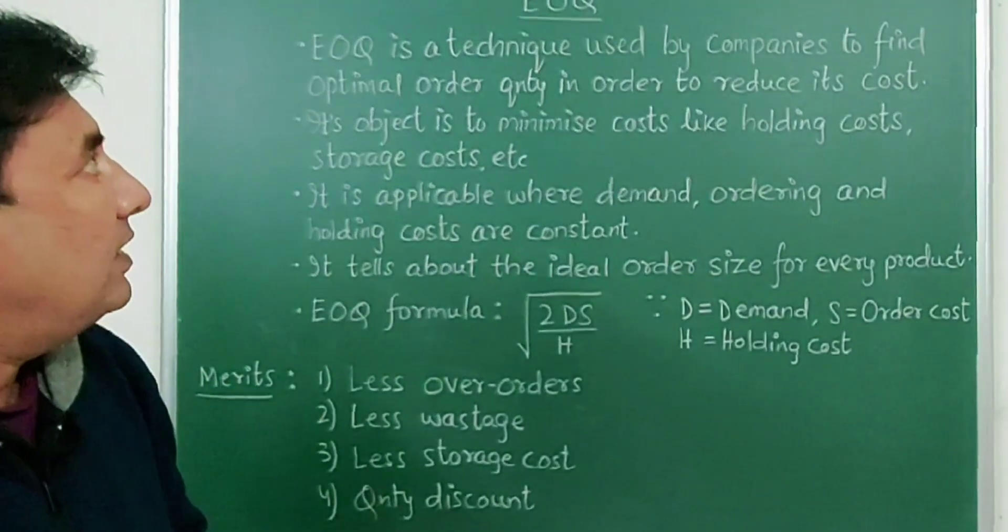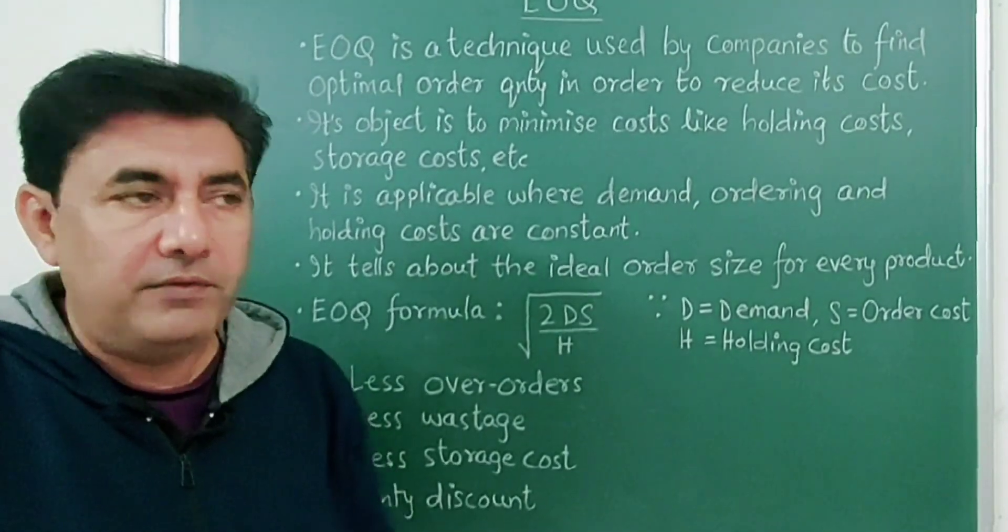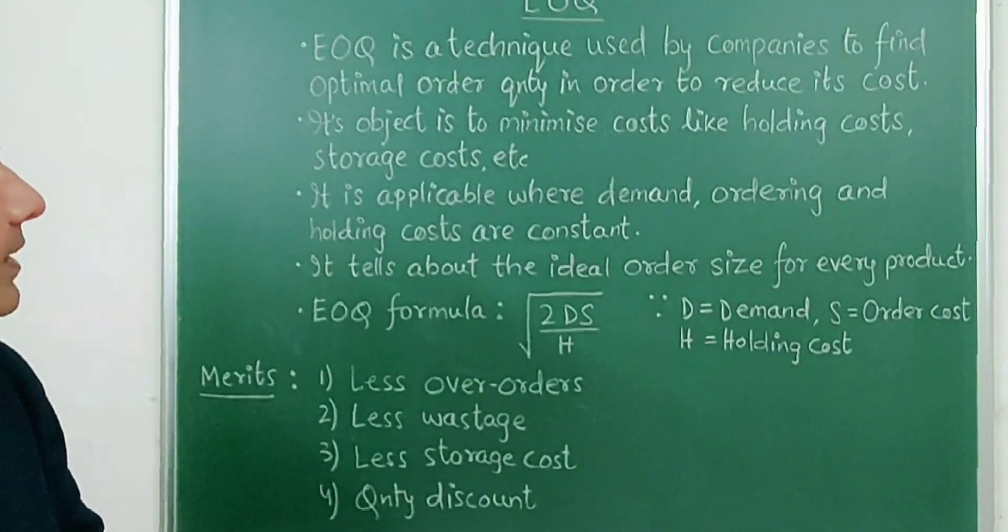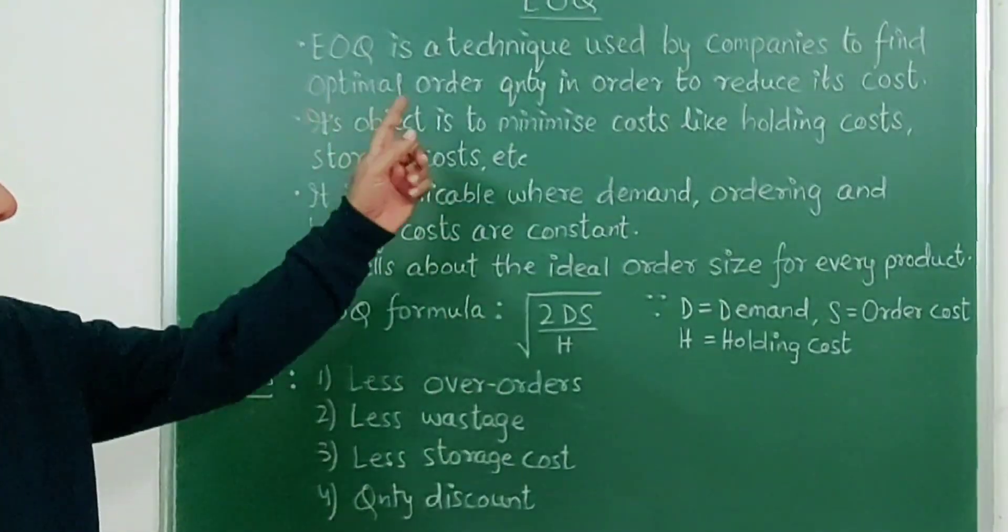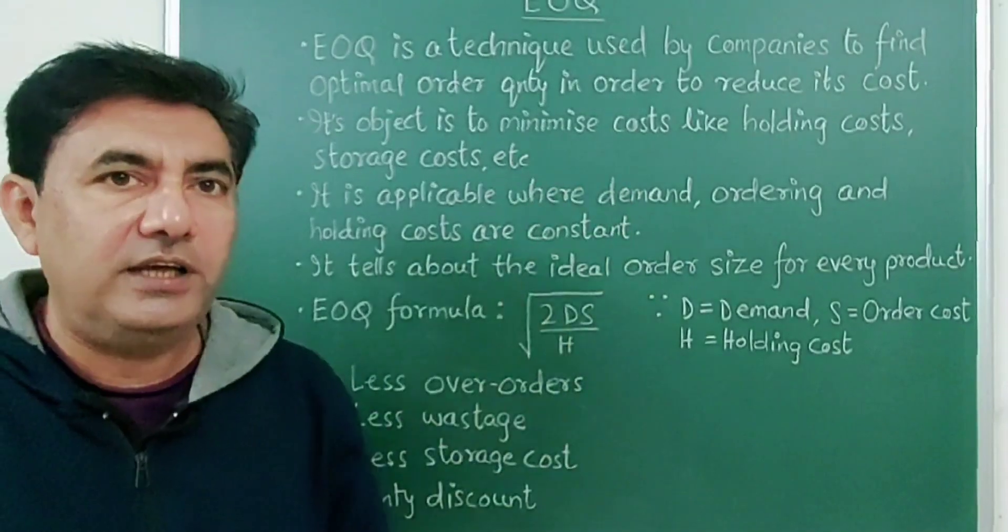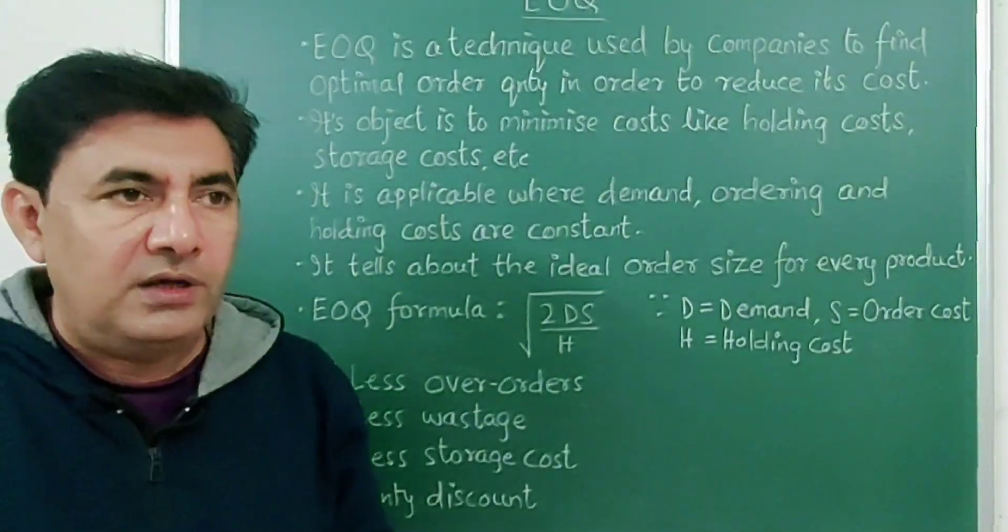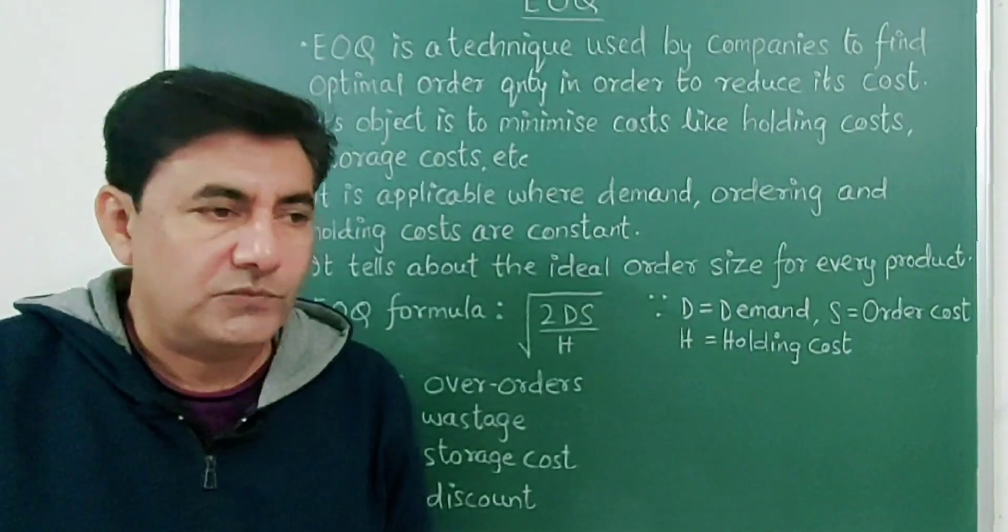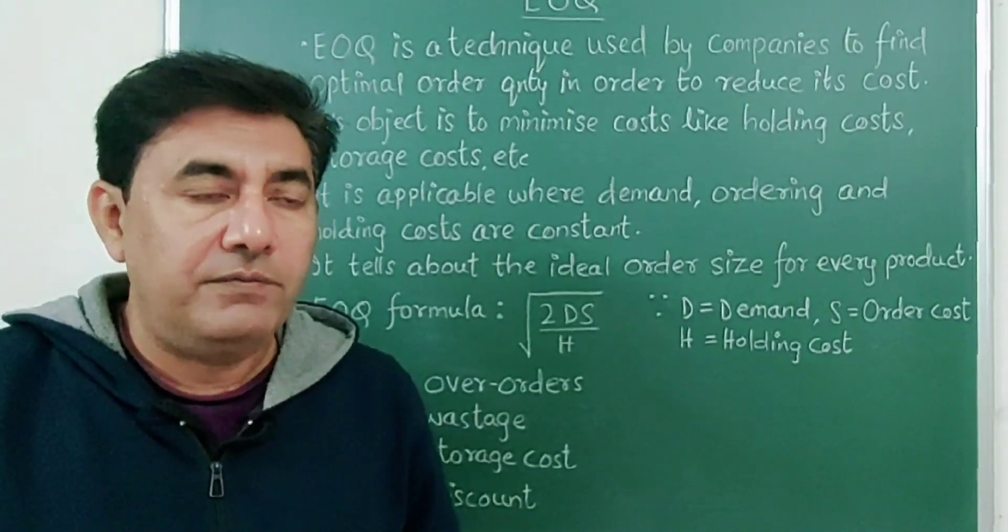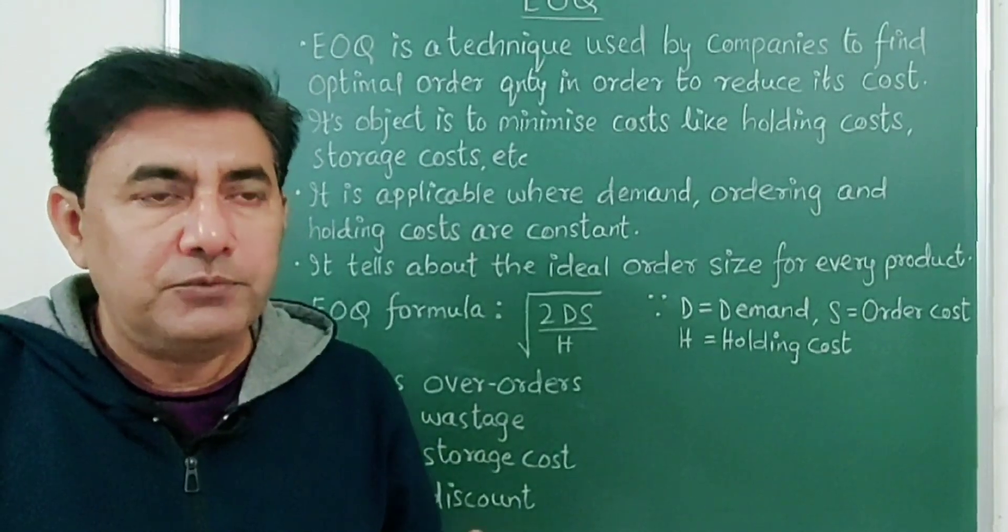Okay friends, as you can see on the board, EOQ, that means Economic Order Quantity. This is a technique to control the inventory stocks. So let's see its key points first. EOQ is a technique used by companies to find optimal order quantity in order to reduce its cost. Now this optimal order quantity means the best order plan, the technique used is EOQ. Second, its object is to minimize costs like holding costs, storage costs, etc. Now every company always wants that its orders should be procured at minimum cost. And for that it will always try to reduce its costs like storage costs, transit costs, ordering costs. Main object for every technique.